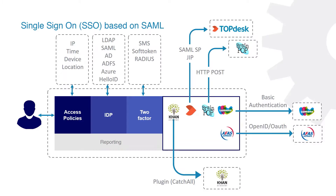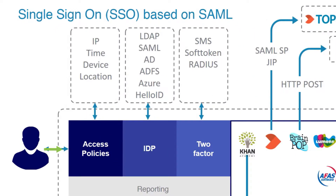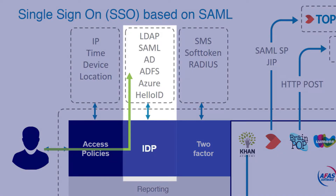Let's start with the SAML SSO integration. An end user would follow this route to get access to Topdesk. The end user would identify themselves with their username and password when signing into HelloID. When the IDP is Active Directory,